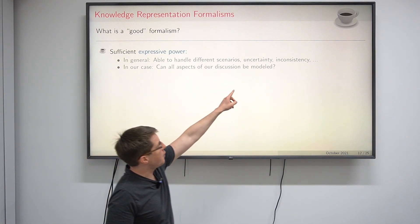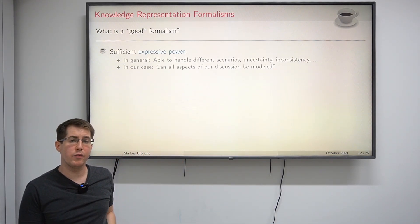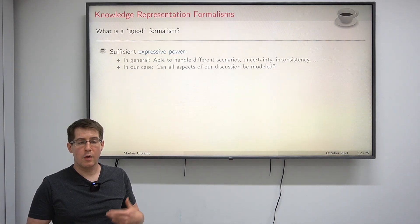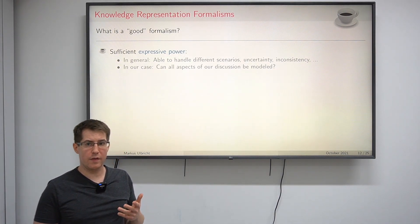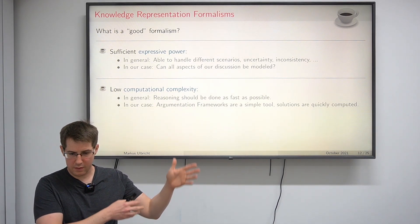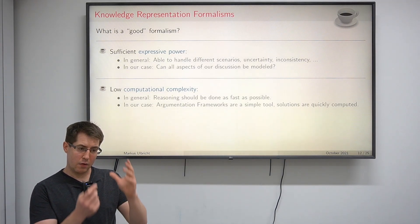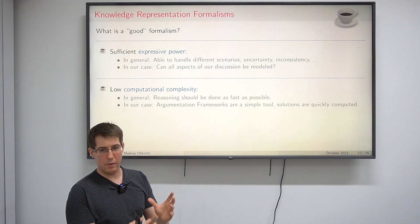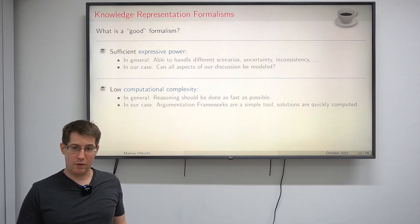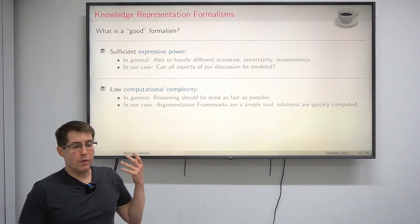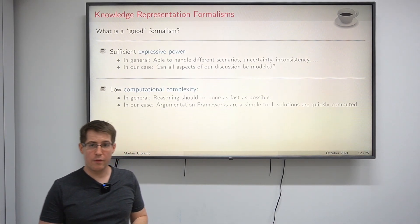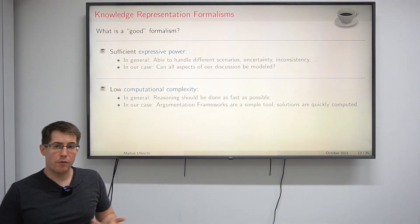There might be situations where we have uncertain or inconsistent data, noisy data, or only probabilities about some data. In this case, we would like a formalism that can handle these situations satisfactorily. The second aspect is computational cost. Suppose you have modeled all aspects of a discussion and you want to know whether a certain argument — like ordering pizza — is reasonable. We want this decision made as fast as possible, so we need a formalism we can handle efficiently. This is the case for argumentation frameworks, which are a simple tool and allow us to compute solutions fairly quickly.